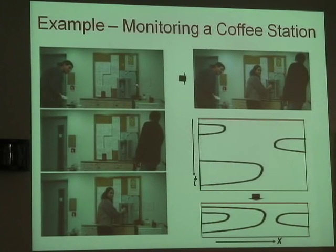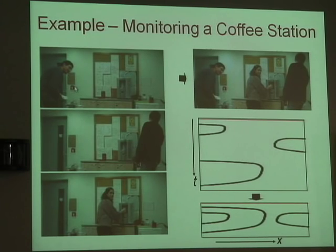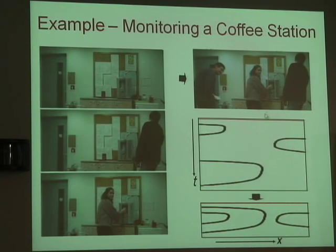I'll skip how we compute them. To show an example: this is a short video outside my office with a water dispenser. We have three people coming. The activity tube looks like this — someone coming from the left, leaving; then another one from the left; someone from the right; and then another one from the left. This is the video: the person coming from the left, the person coming from the right.